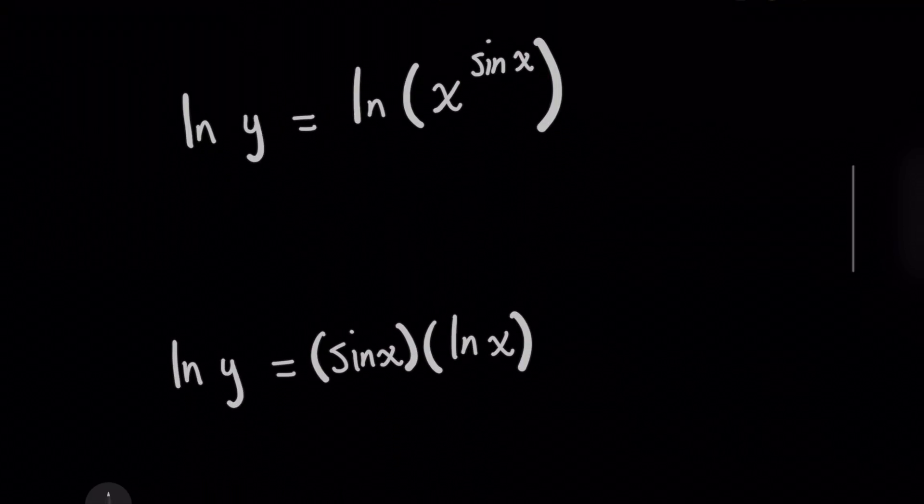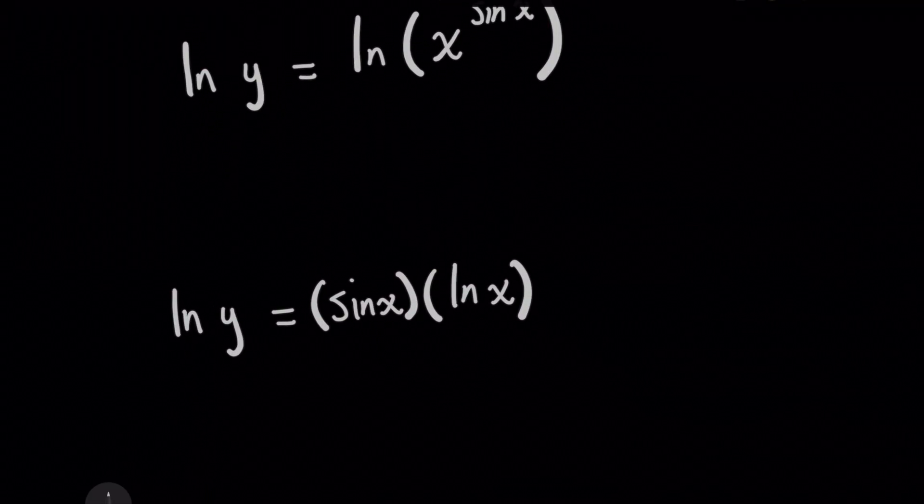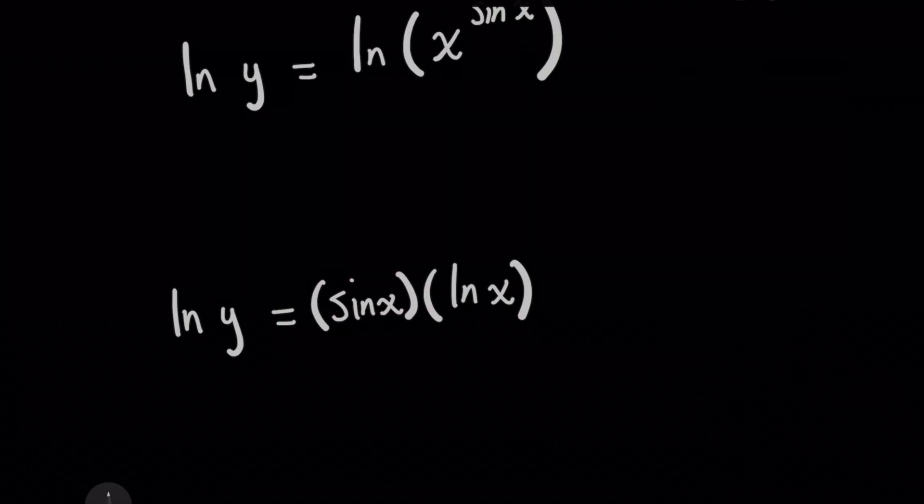And so what's really nice about this is if you look at this now and take the derivative of both sides independently, the right side is now going to be a very simple product rule. And then for the left side, this is where the magic of implicit differentiation comes in.